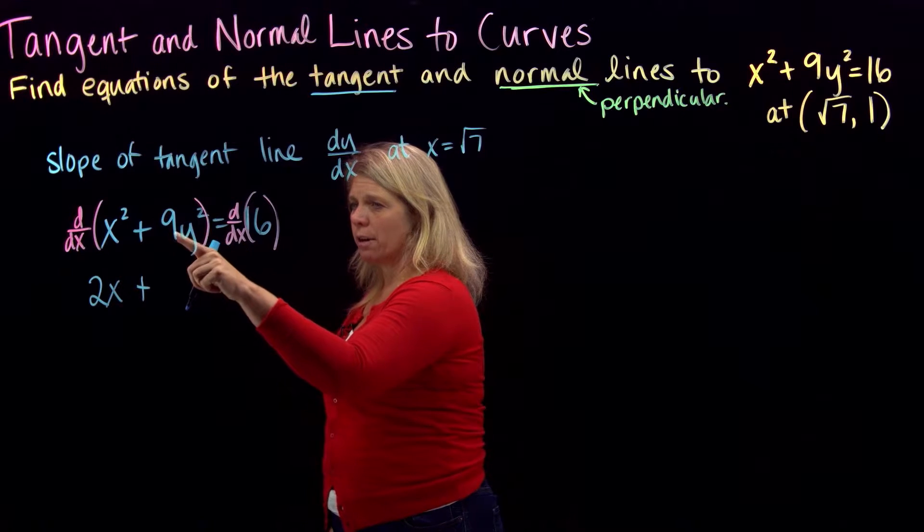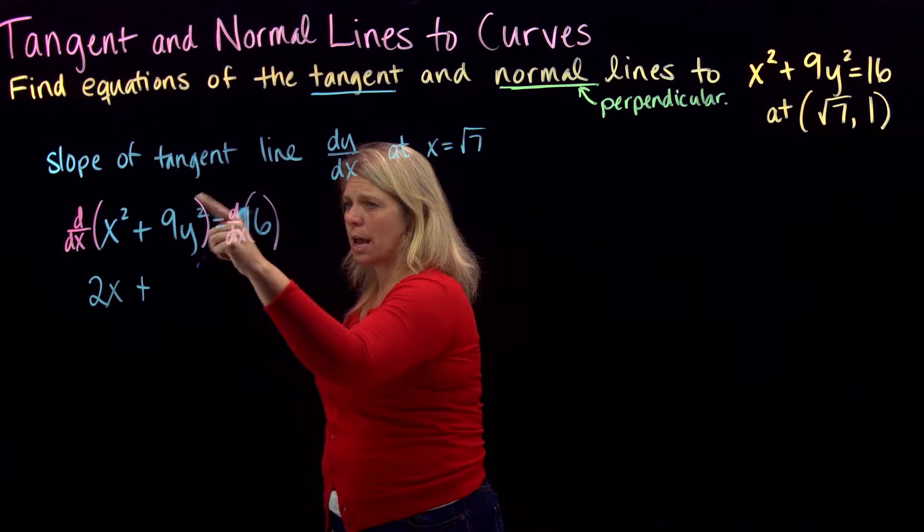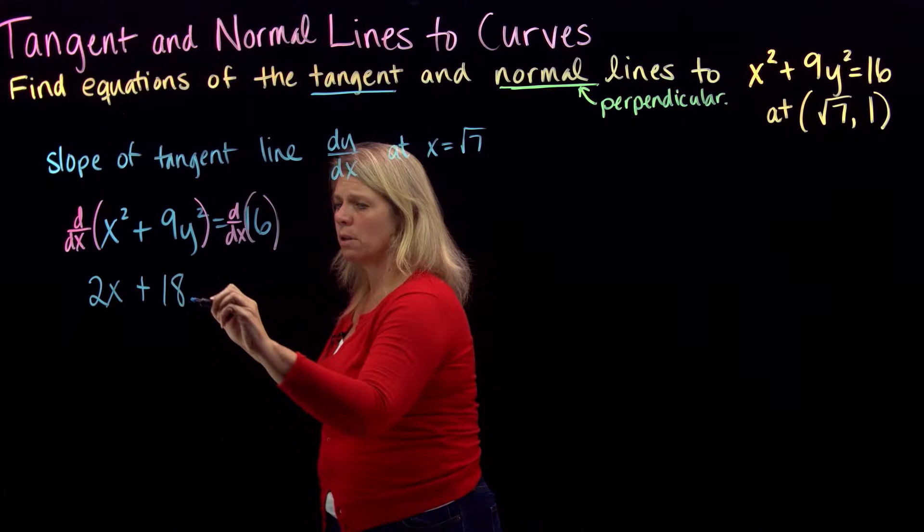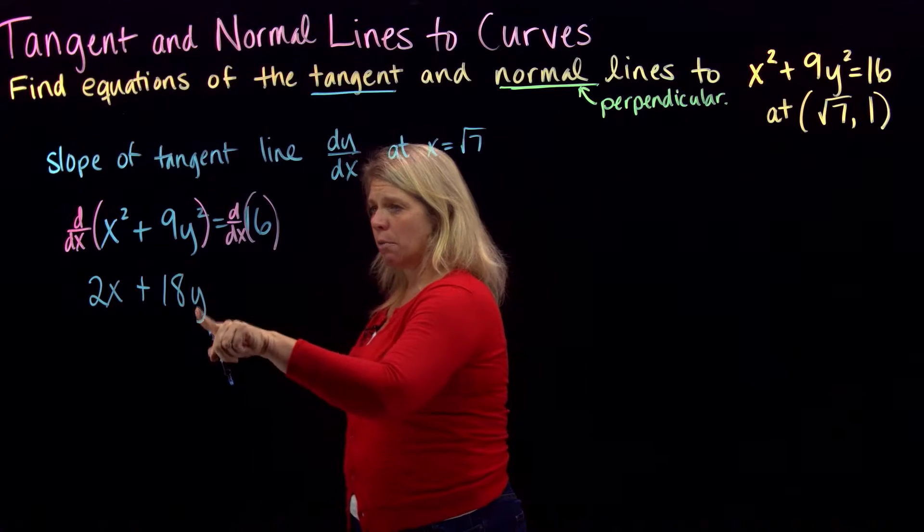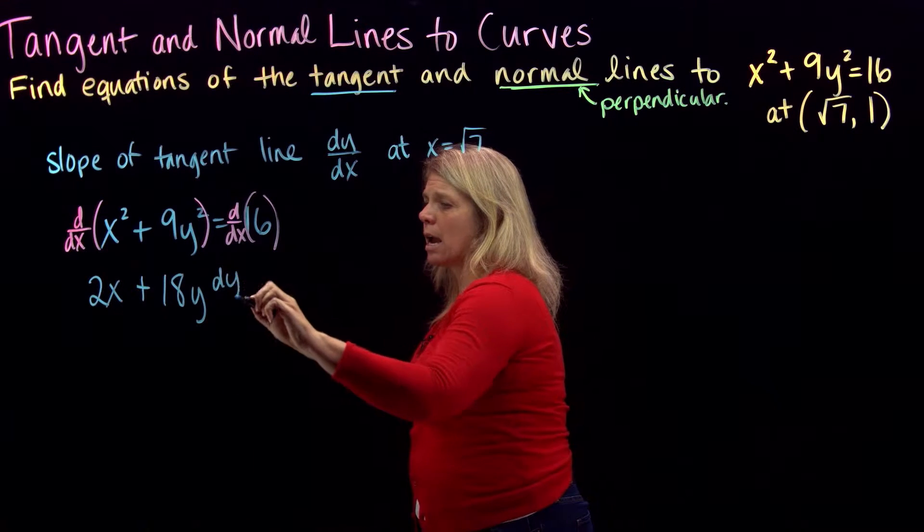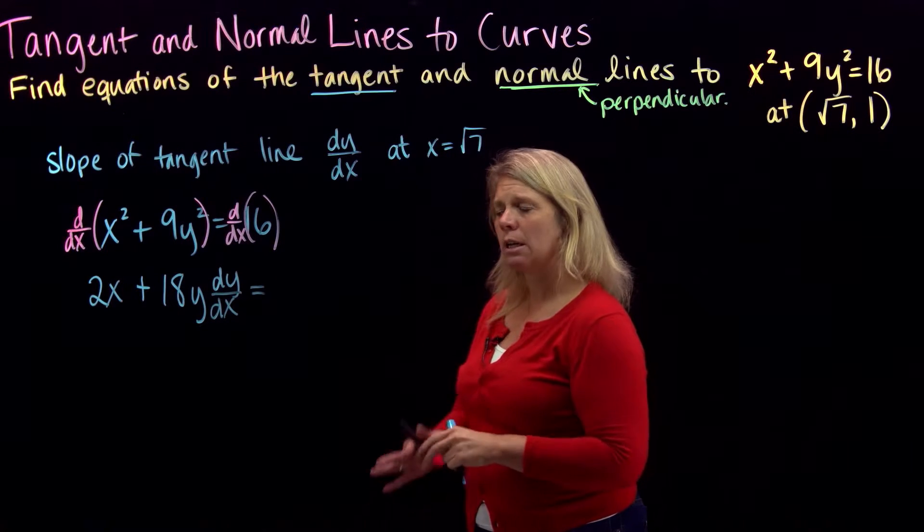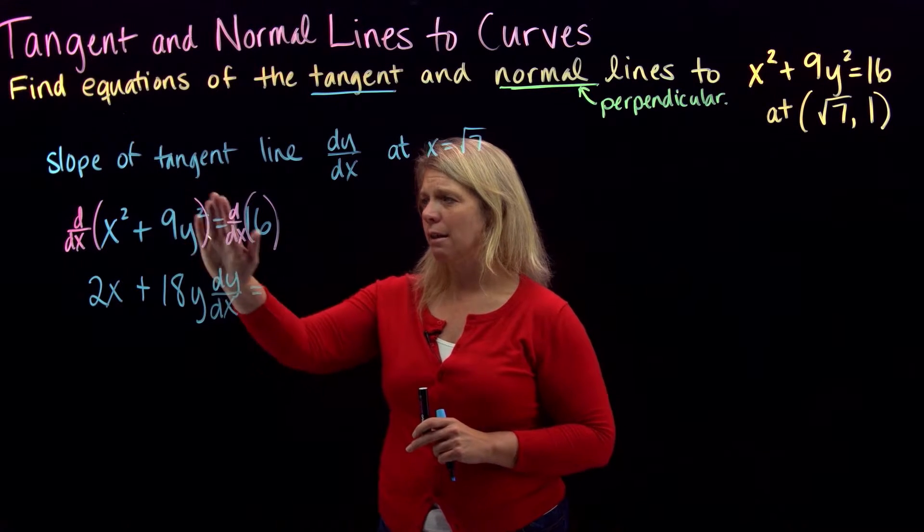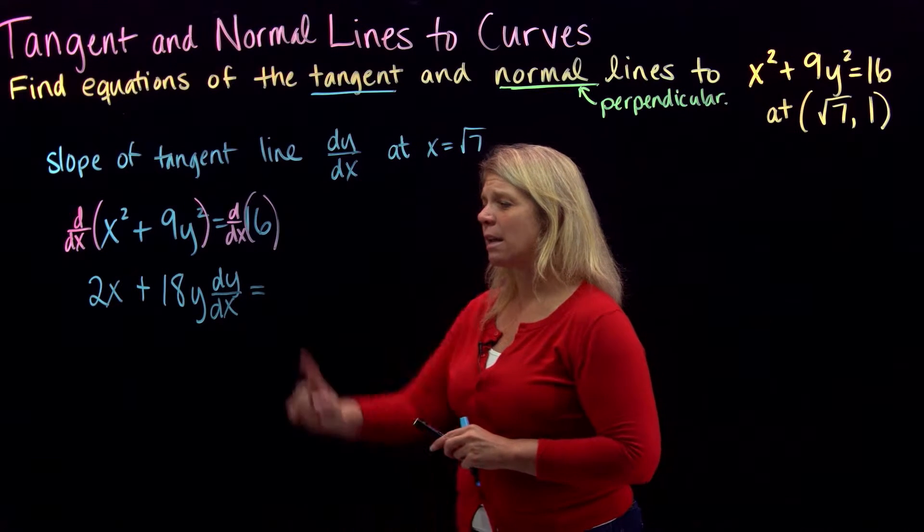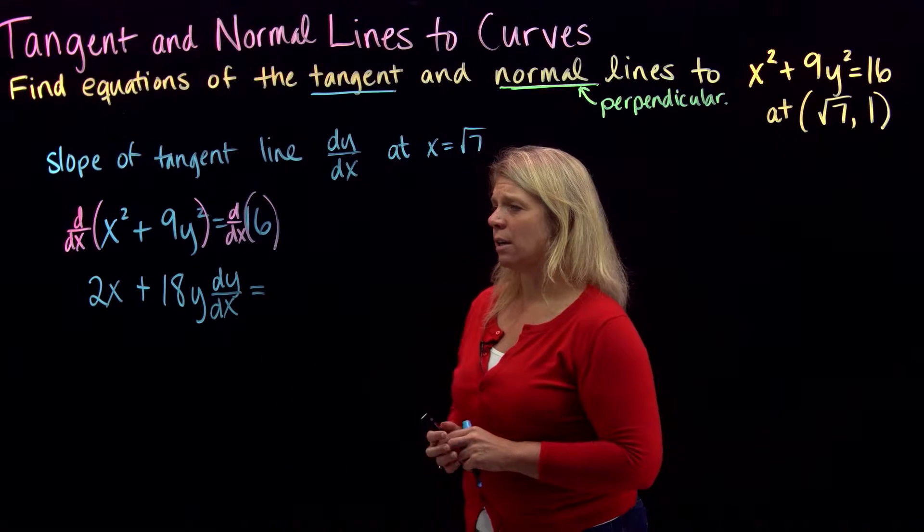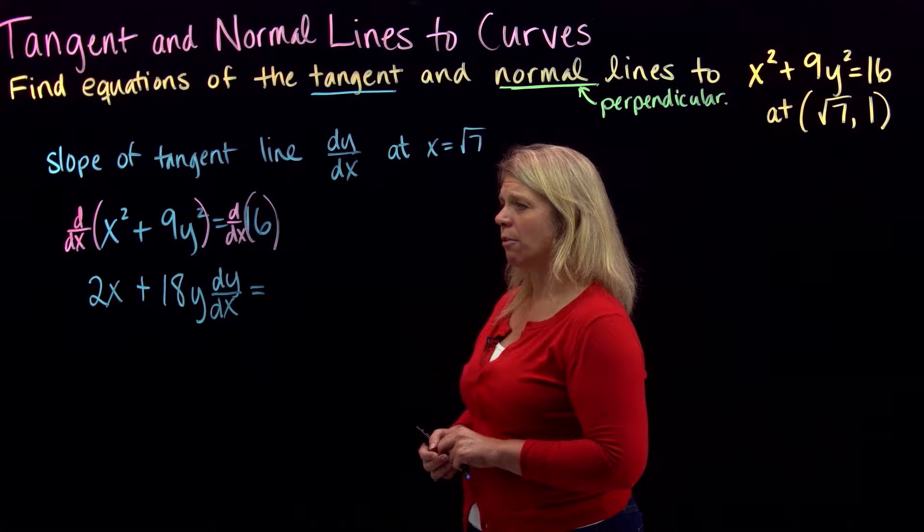So the derivative of 9y squared, we'll use the exponent rule here, the power rule, we'll have 18y. But really, I'm using chain rule here, times dy dx. Remember that when you do implicit differentiation, and you're differentiating anything that involves your dependent variable y, you're going to have this extra factor of dy dx. That's really from chain rule.